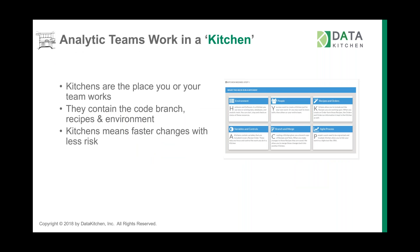A kitchen is a place to work. You build a kitchen — it has an environment. A kitchen lets you start up and shut down a set of servers, assign a space in a server, invite people to work in it, run recipes separately, do a build-test-deploy cycle. We're big believers in variables, controls, and parameters scoped to a kitchen. We also create a Git branch and help you merge from the kitchen, and we can link to any agile process you have.